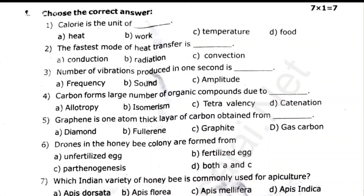Question 3: Graphene is a one-atom-thick layer of carbon obtained from graphite. Question 4: Drones in the honey bee colony are formed from unfertilized eggs. Question 5: Indian variety of honey bee is commonly used for agriculture.